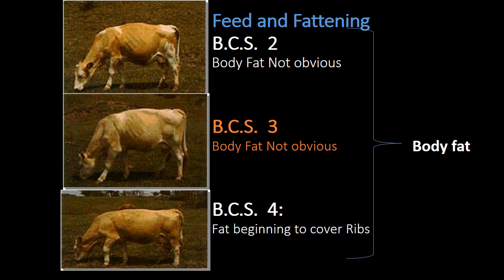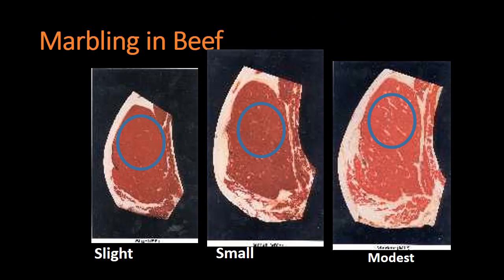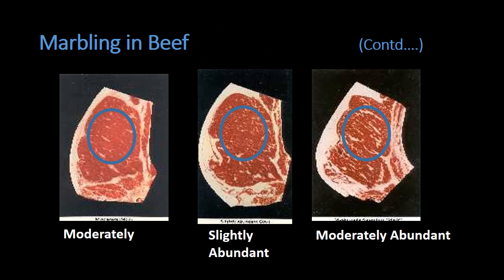Looking at marbling in beef: there is slight marbling, small marbling, and modest marbling. In slight marbling you can see very little fat spots in white color, whereas in modest marbling the fat is visible as white lines. Marbling is categorized from moderately abundant to small using six categories — slight, small, modest, moderate, slightly abundant, and moderately abundant.